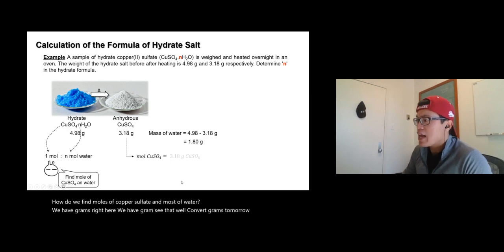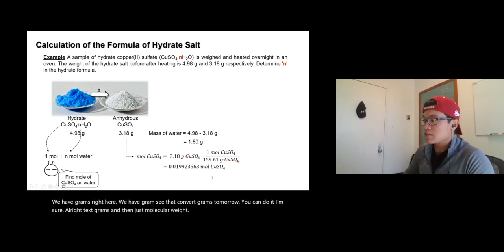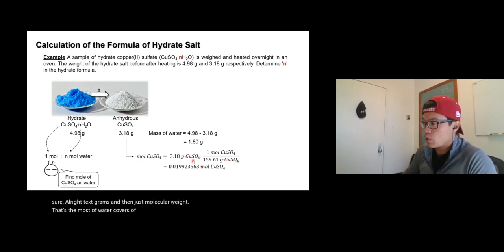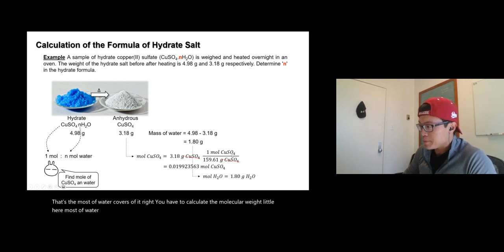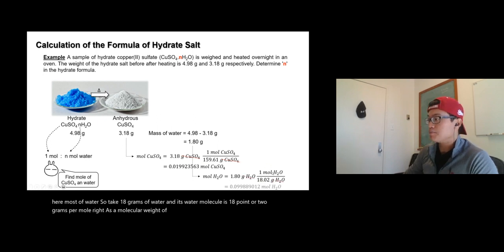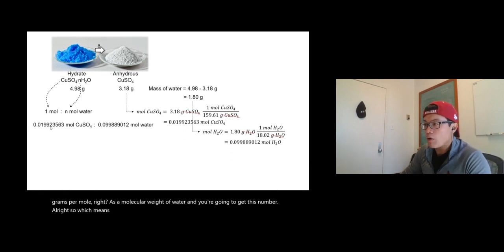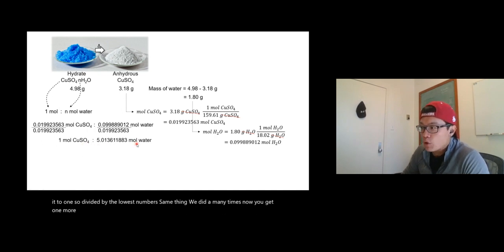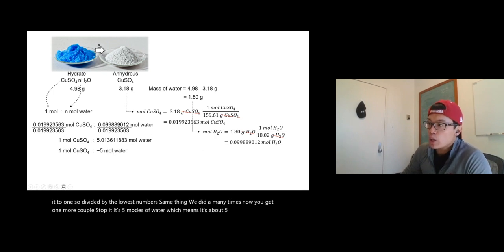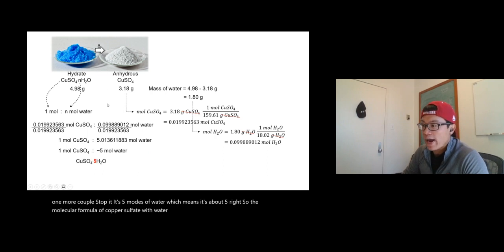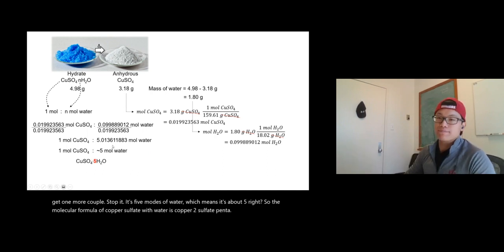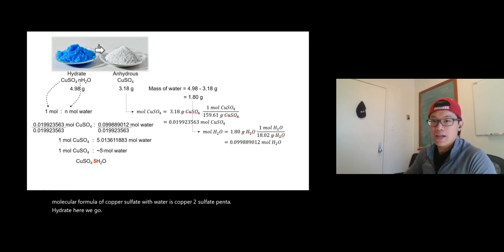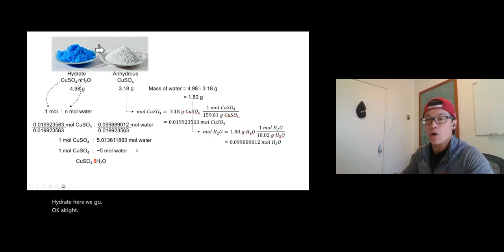To find n in the formula CuSO4·nH2O, you need moles of copper sulfate and moles of water. Convert grams to moles using molecular weights. Take 1.80 grams of water divided by 18.02 grams per mole to get moles of water. Divide both mole values by the smallest to get the ratio — you get 1 mole of copper sulfate to 5 moles of water, giving the molecular formula copper sulfate pentahydrate: CuSO4·5H2O.